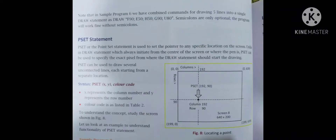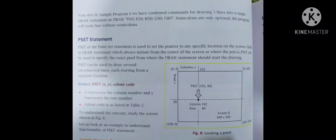The PSET or point-set statement is used to set the pointer to any specific location on the screen. Unlike the DRAW statement, which always initiates from the center or where the pen is, PSET can specify the exact pixel from where the DRAW statement should start drawing. PSET can be used to draw several unconnected lines, each starting from a separate location.